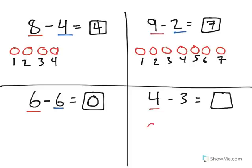And the last one, 4 minus 3, we start with 4. Then we're going to take away 3, which leaves us with 1. That's how you solve simple subtraction problems using drawings to help.